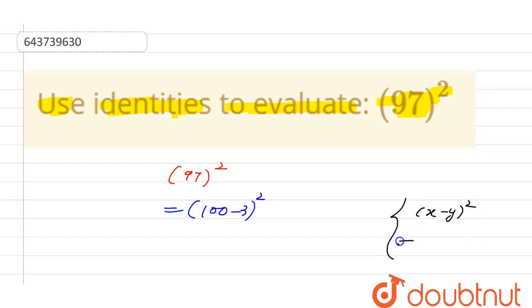The formula says x squared plus y squared minus 2 into x into y. So this is equal to a squared, 100 squared, plus b squared, 3 squared, minus 2 into 100 into 3.